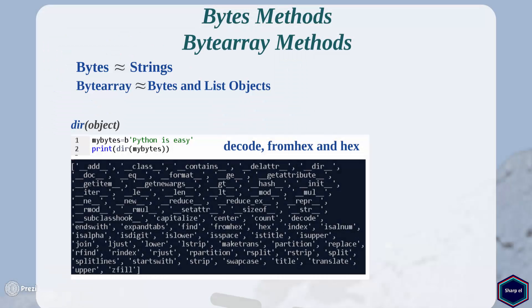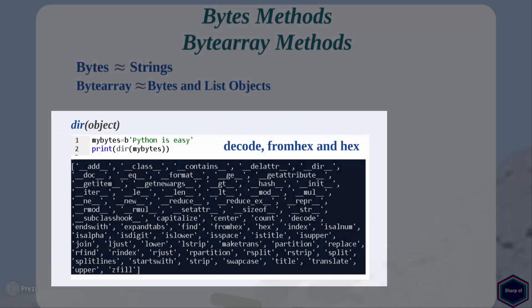Let's first look at bytes objects. If you call the built-in function dir() on a bytes object it will return all bytes class methods. If you look at the output, you can see that the bytes class provides almost the same methods as the string class, except decode, fromhex, and hex methods. So in this tutorial I will only cover these three methods, because all other bytes class methods work exactly like string class methods, which I have already covered in my string methods tutorial.